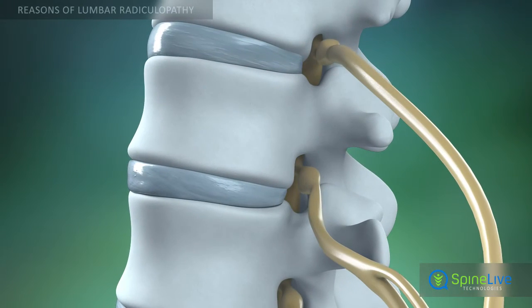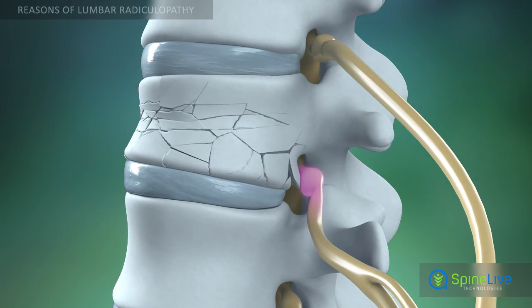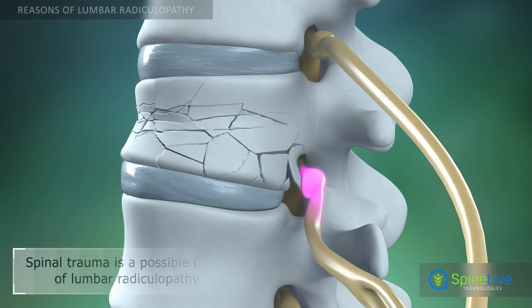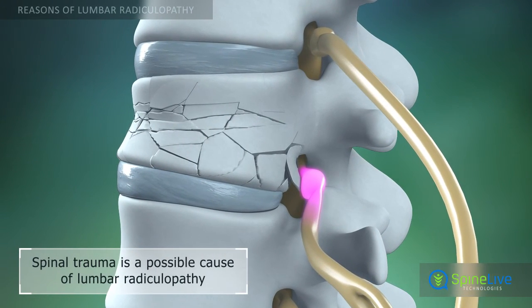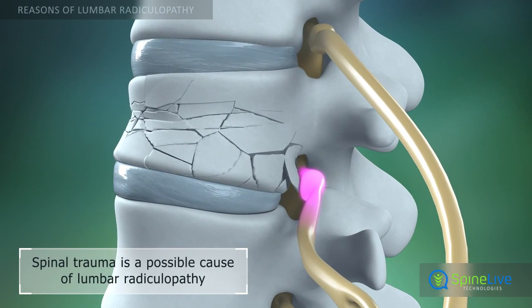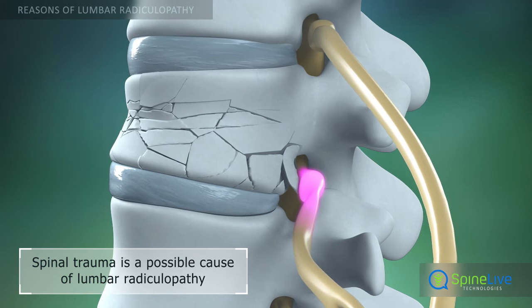Spinal trauma, such as vertebral fractures, can cause dislocation of bone fragments and compression of nerve roots.